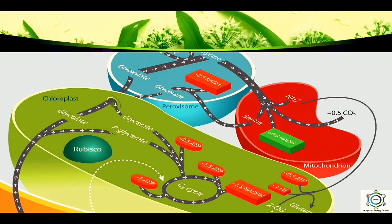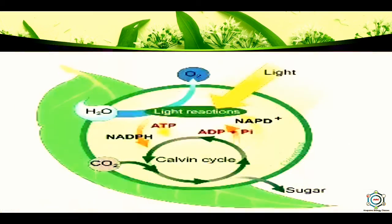The process of photorespiration interferes with the successful functioning of the C3 cycle in C3 plants. In these plants, some oxygen binds to enzyme rubisco and hence carbon dioxide fixation is decreased. Moreover, there is neither synthesis of sugars nor of ATP. Instead, it results in the release of carbon dioxide by utilizing ATP. Thus photorespiration, which occurs in C3 plants but not in C4 plants, is a wasteful process because as much as half of the photosynthetically fixed carbon dioxide may be lost into the atmosphere.